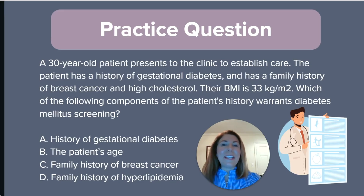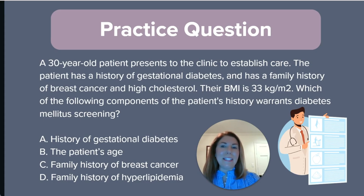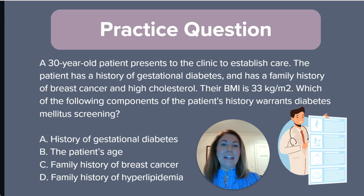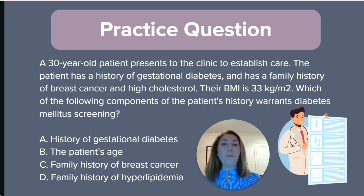For our practice question today, we will focus on appropriate screening recommendations for diabetes. A 30-year-old patient presents to the clinic to establish care. The patient has a history of gestational diabetes and has a family history of breast cancer and high cholesterol. Their BMI is 33. Which of the following components of the patient's history warrants diabetes mellitus screening?